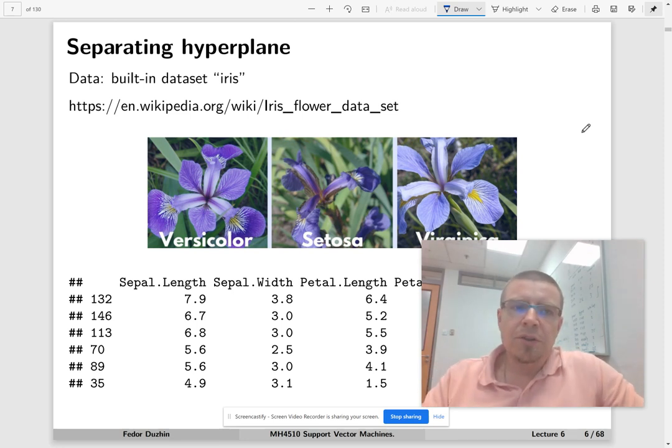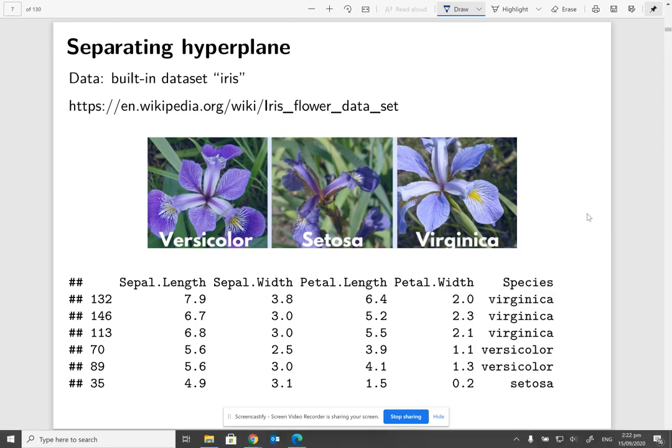First, we are going to talk about a separating hyperplane. The data set that I'm going to use is the famous iris data set. This is measurements of three species of iris flowers.